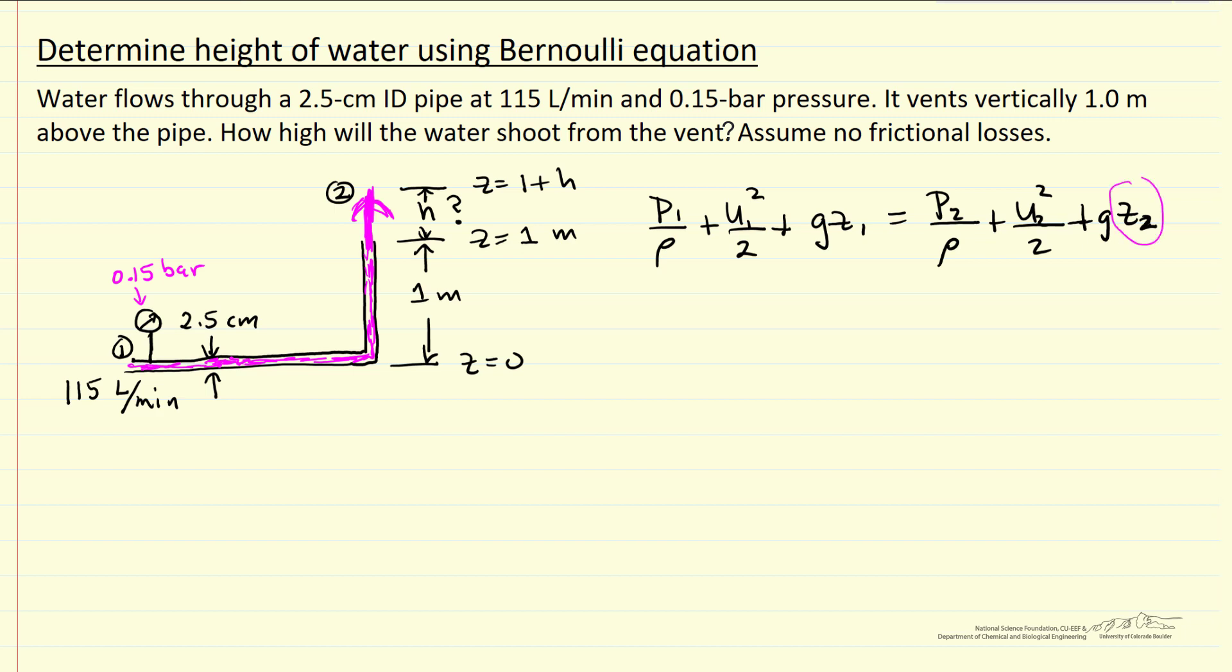So what we're interested in determining then is z two. So this is the two here, that's our unknown. Let's first look at simplifying the equation. The way we define z, this is z one, so z one is zero. Now at the point where the water reaches its maximum height, the velocity is zero, it slows down, it's moving slower until it doesn't go any higher, therefore u two is zero, so this term is gone.